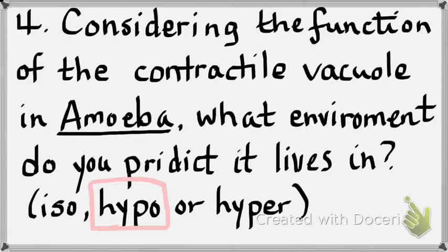What would happen to an amoeba if the contractile vacuole stopped working? It would burst, because it doesn't have a cell wall. The answer is: it lives in a hypotonic environment. Anything that lives in fresh water — a lake, pond, river, stream — that's hypotonic. Anything that lives in salt water — isotonic. Life evolved in the oceans, so most cells are isotonic to ocean water.